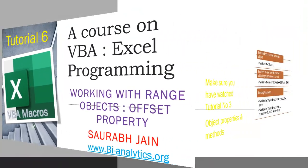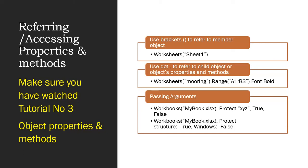Let's start. We read in tutorial number three, which I am revising again, that Excel VBA is object-oriented programming and there are steps in referring or accessing properties and methods. First, use brackets to refer to a member object — it means we have to refer a member object from collections. So 'Worksheets' is a collection and 'Sheet1' is a member of that collection. Second, use dot notation to refer to child objects, or object properties and methods — for example, Range("A1").Value = 25. For passing arguments you have two methods: you use colon-equals or you can use a space.